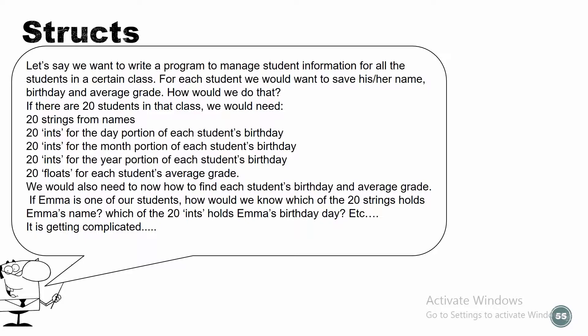Let's say I have 20 students. Should I have one array for all the days, one array for all the months, and one array for all the years? That could be a solution. But then how do I correlate between those? How do I know, for Mark, what would be his exact birthday — which element to grab from each array? It's possible, but this is just a simple example for something that could be more complicated.